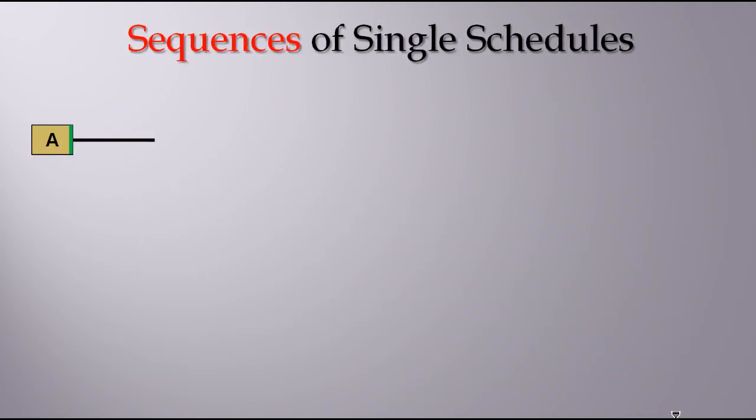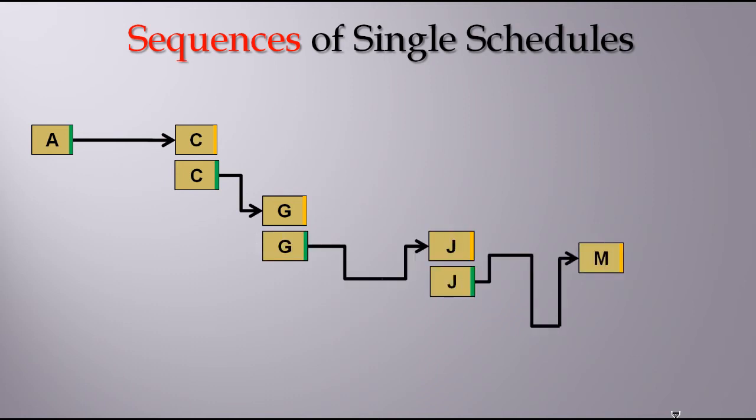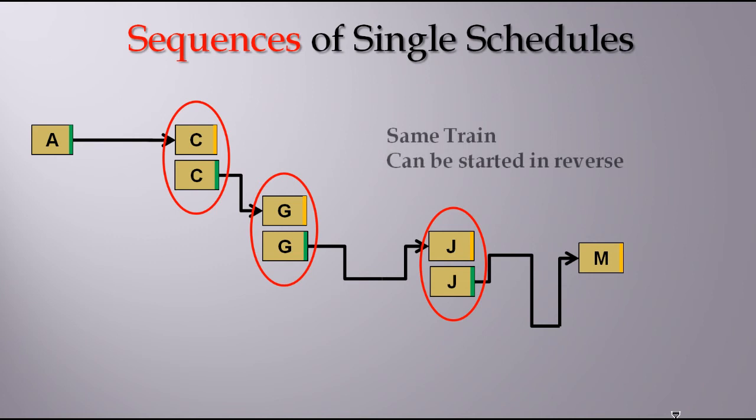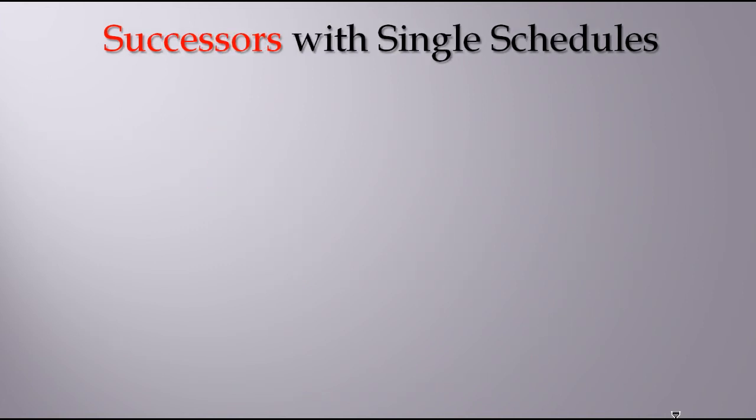Using these individual schedules I've just compressed them horizontally and we can see that the finish of one schedule is the start of another schedule. Hence we can get the train to operate all the way through these and generally move through quite a complex, if you want, system. It has to be the same train and can actually be started in reverse, but it's the easiest means of getting from A to M.